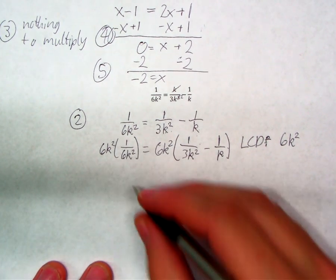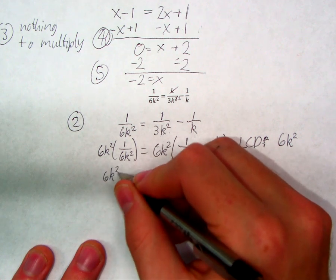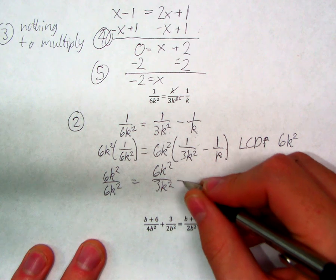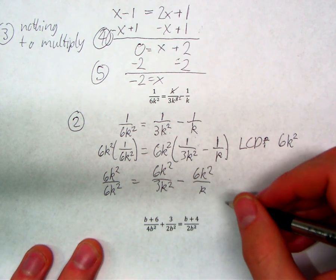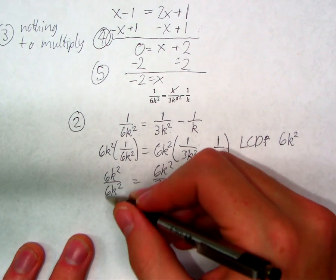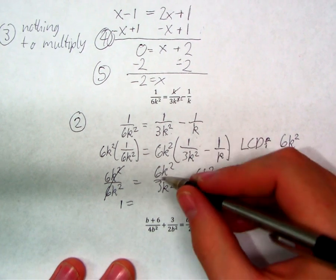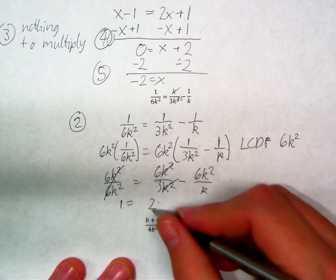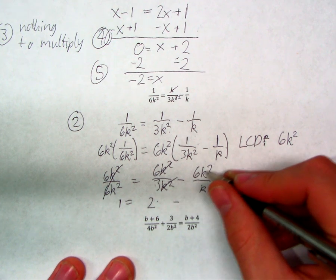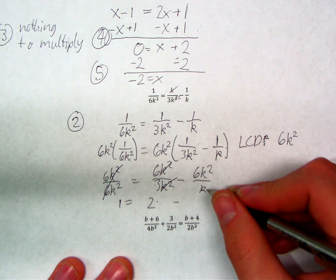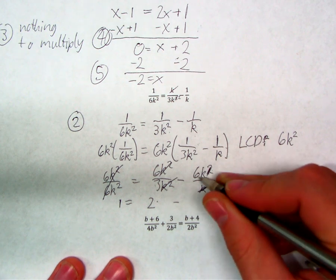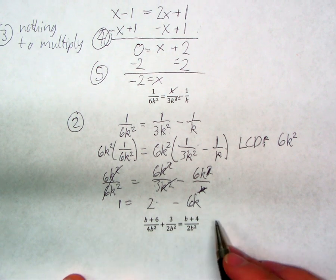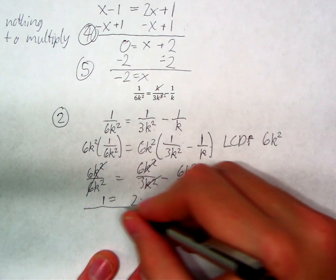Distributing, I've got six k squared over six k squared equals six k squared over three k squared minus six k squared over k. Now, does anything cancel? Six k squared over six k squared cancels entirely, giving one. Then six divided by three is two and k squared over k squared cancels, giving just two from that fraction. For the last term, six k squared over k — k squared is k times k, one k cancels, leaving six k. So I've got one equals two minus six k, and all denominators are gone.